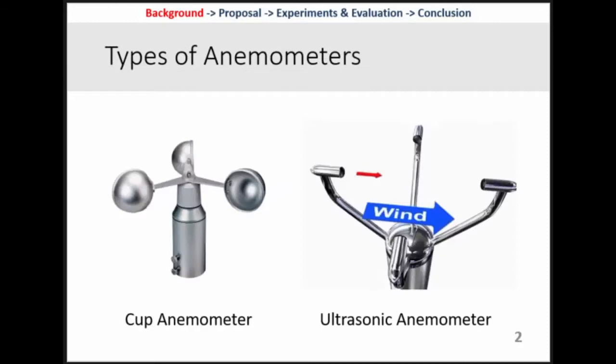I introduce types of anemometers. There are two major types: a cup anemometer and ultrasonic anemometers. Cup anemometers measure the wind speed by counting the cup's rotation, and ultrasonic anemometers measure the wind speed by observing the change of ultrasonic time-of-flight. The time-of-flight is called TOF, and the ultrasonic TOF will change when the wind blows. I expected to use anemometers on the sea, so I chose ultrasonic anemometers because they are tough.